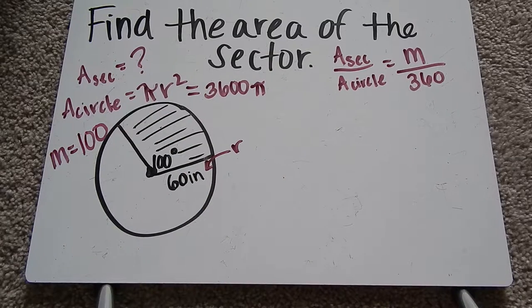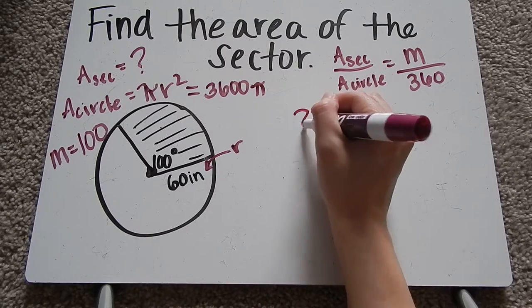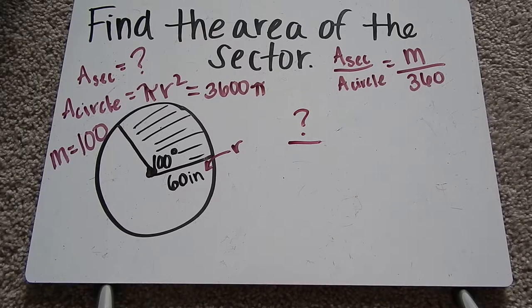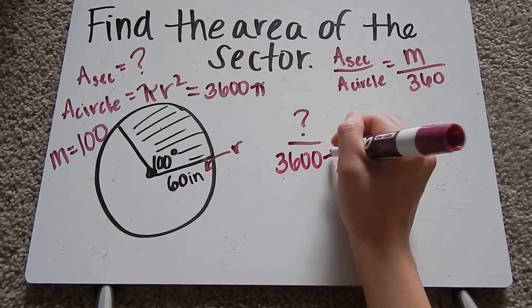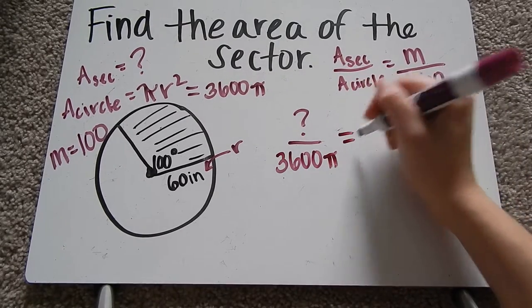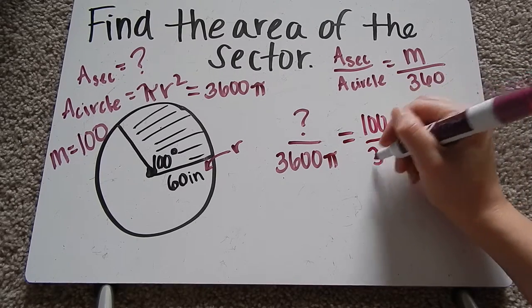Now we can write in the formula. So I have my area of the sector, which let's just call that question mark. That's what I don't know. So area of the circle, I already labeled, is 3600π, equals 100 over 360.